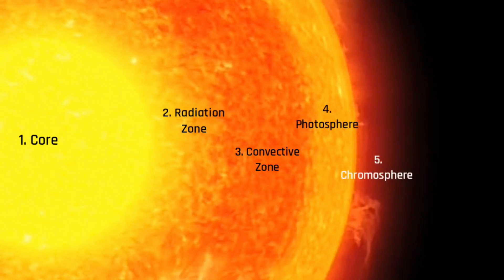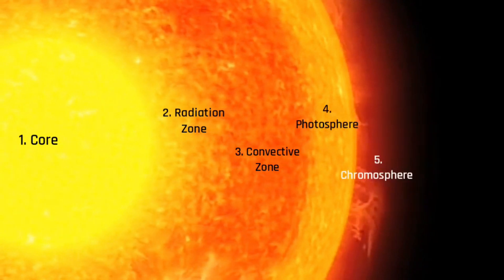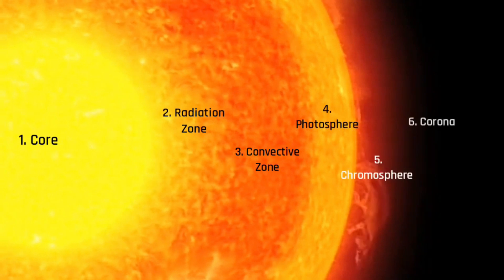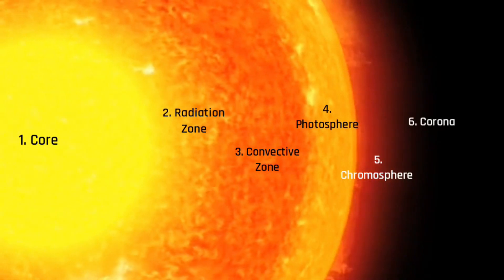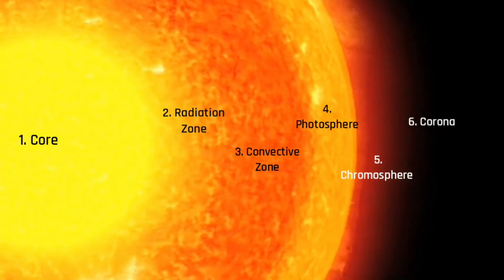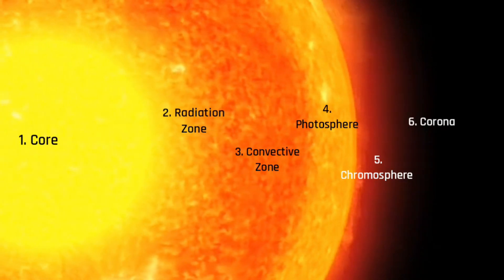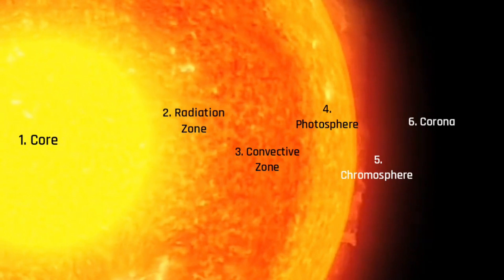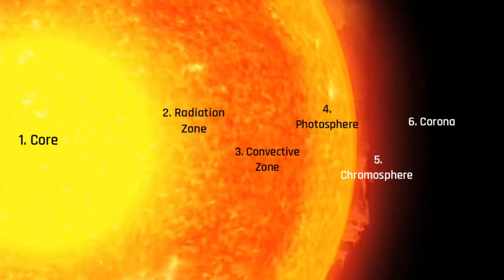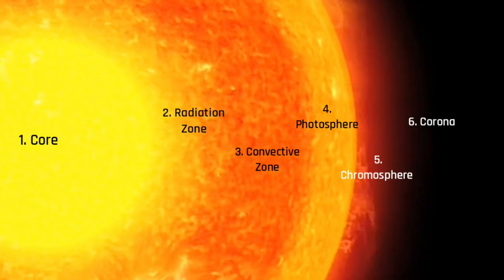These layers constitute an intermediate zone, having temperatures around 10,000 Kelvin. Beyond these layers lies the Sun's outermost region, where temperatures soar to around 1 million Kelvin. This raises the question: why does the outer layer of the Sun possess a higher temperature compared to the intermediate layers?